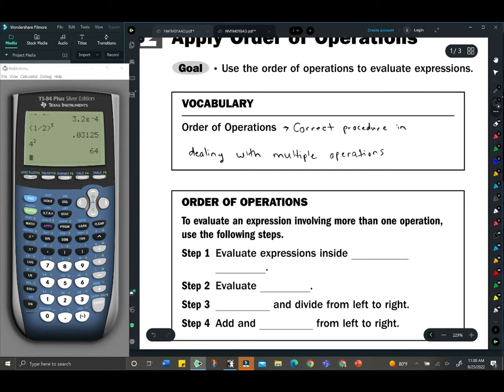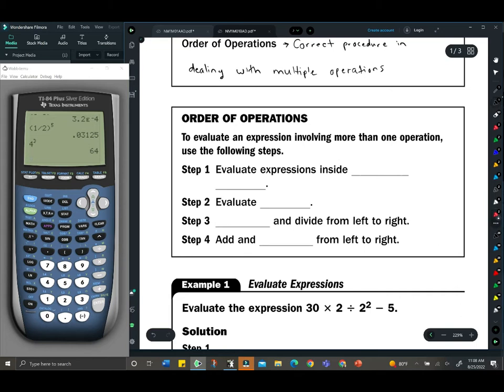Here is what always needs to be done to evaluate an expression involving more than one operation. Use the following steps: Step 1, evaluate the expressions inside parentheses. Those can be parentheses, brackets, anything like that. Step 2, evaluate any exponents.